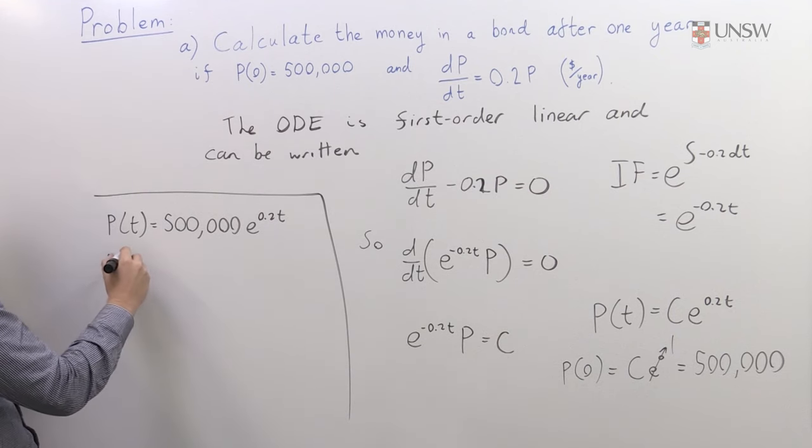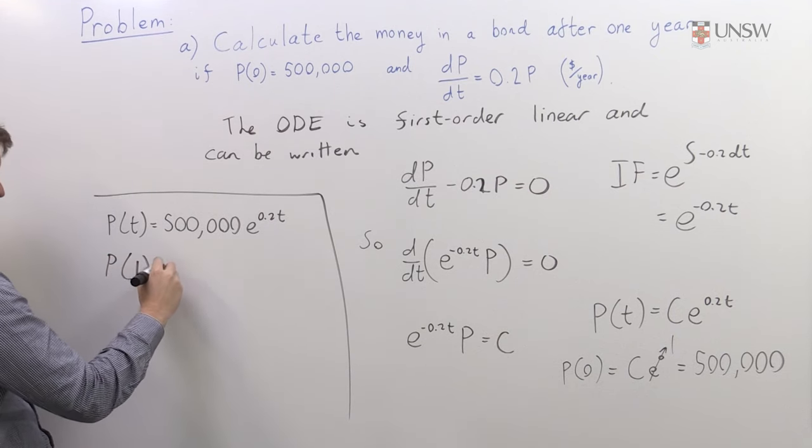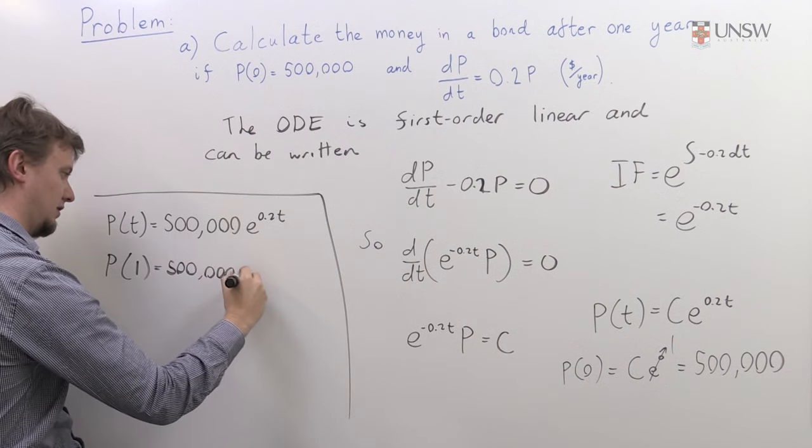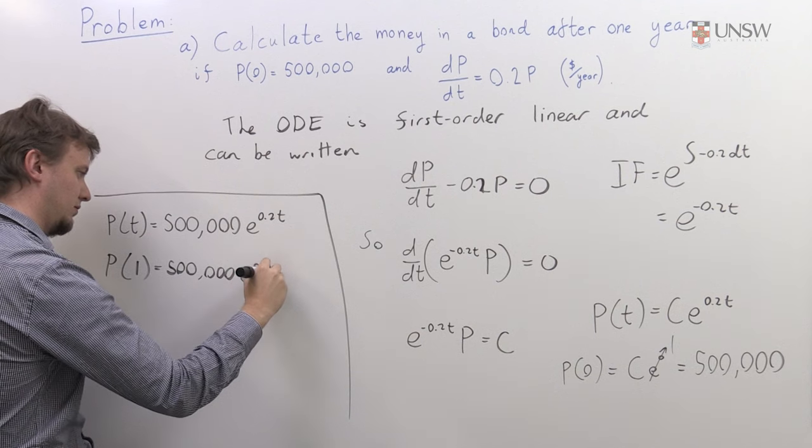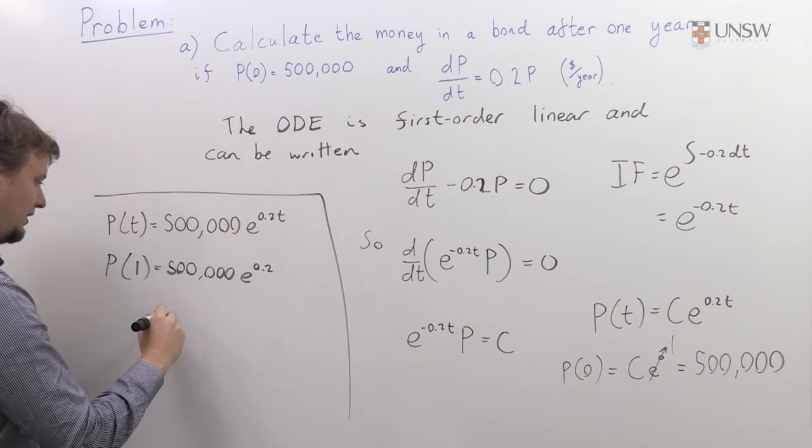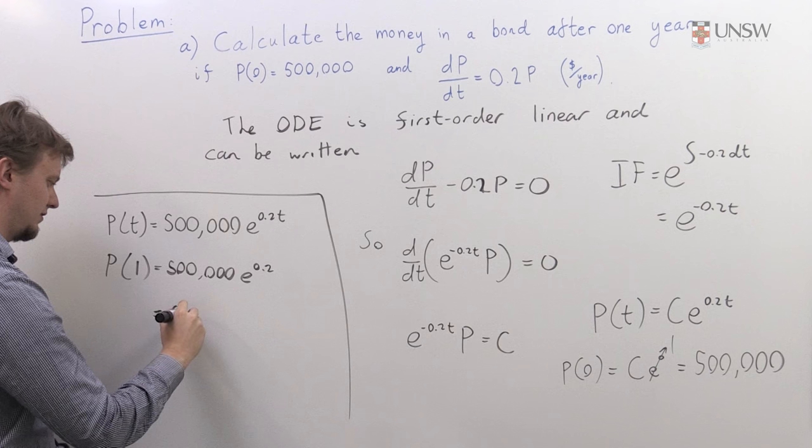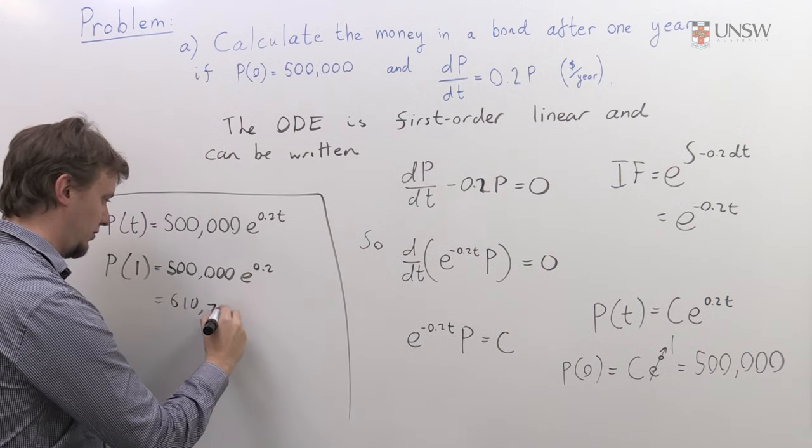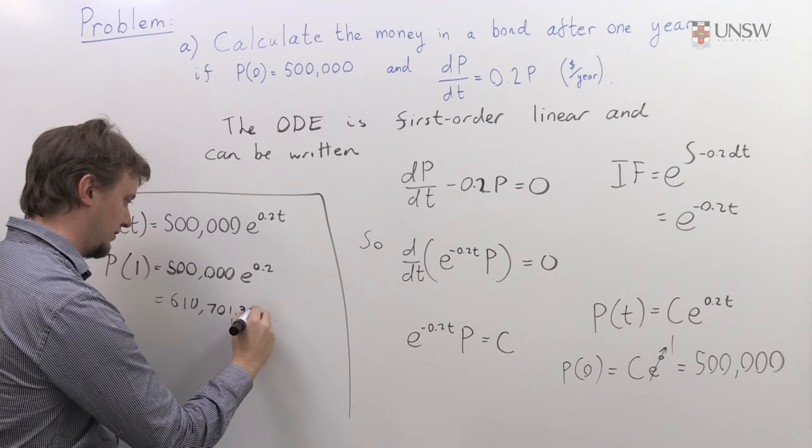So P(1) is just half a million times e to the 0.2. If we plug that into a calculator, you'll find it's $610,701.38.